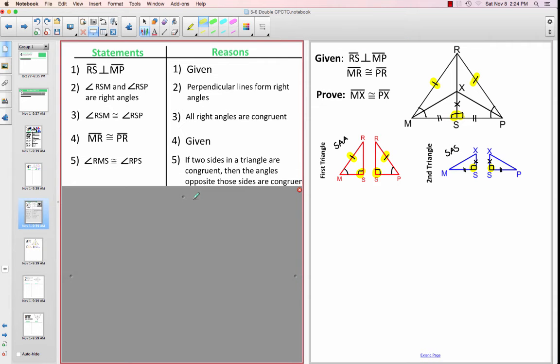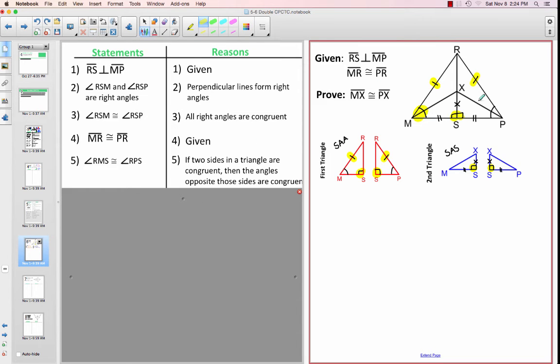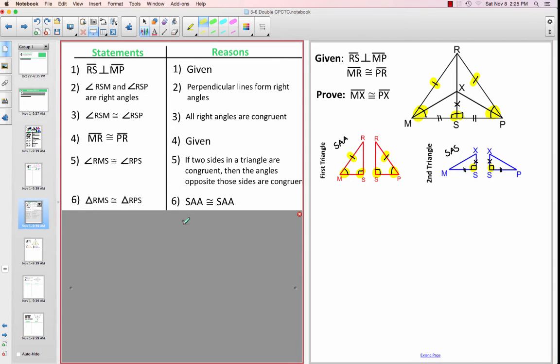Then we have angle RMS is congruent to angle RPS. And our reason for that is, if two sides in a triangle are congruent, then the angles opposite those sides are congruent as well. Now you notice that for the big triangles, those big half triangles, we have all of our pieces, so we can go ahead and actually prove those by using side angle angle.